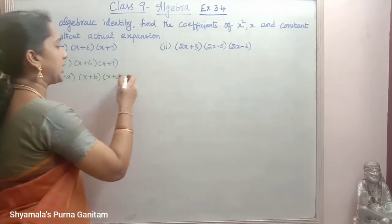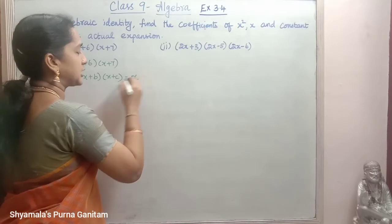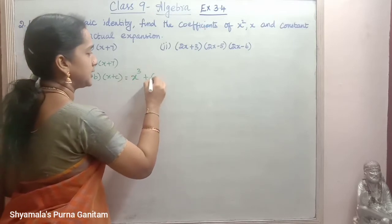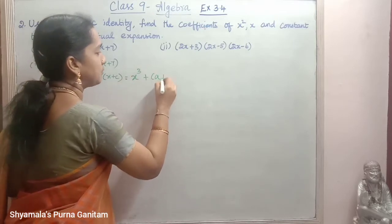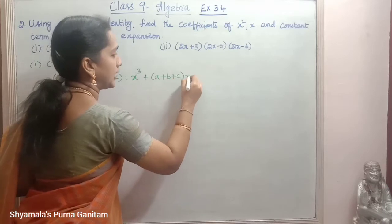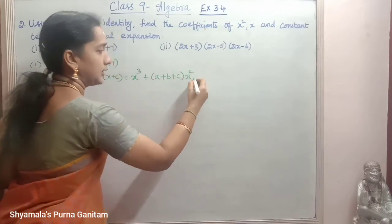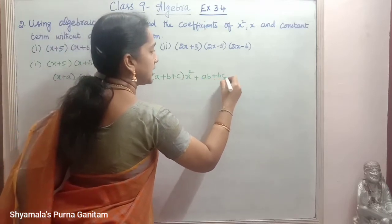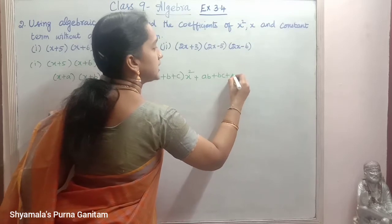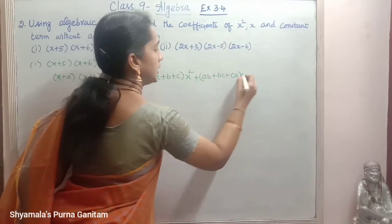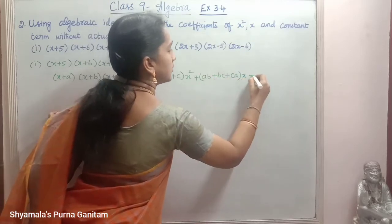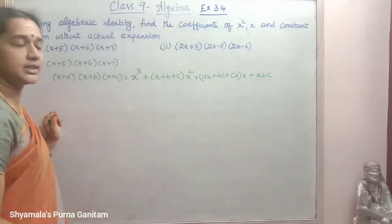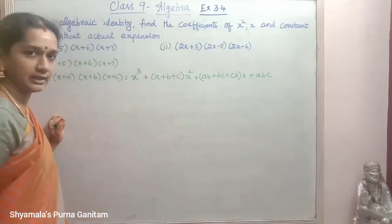When we expand this identity, the expansion is: x³ + (a+b+c)x² + (ab+bc+ca)x + abc. This is the expansion of this identity.